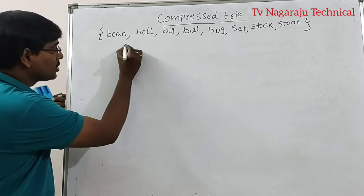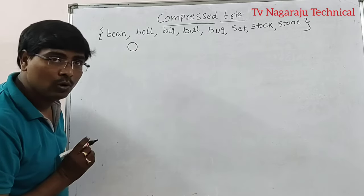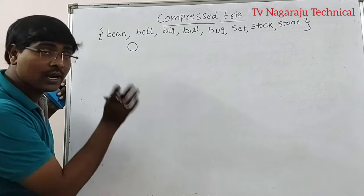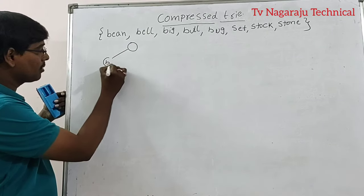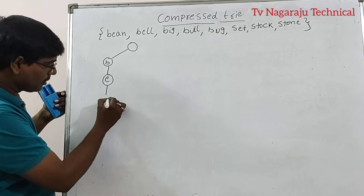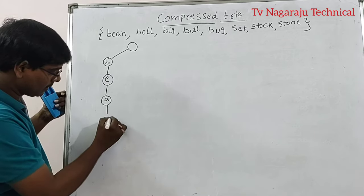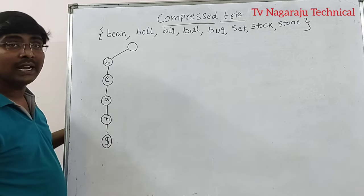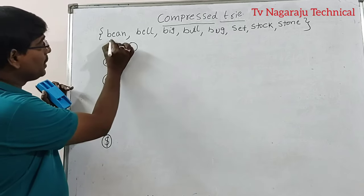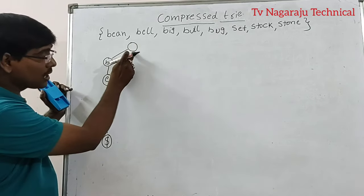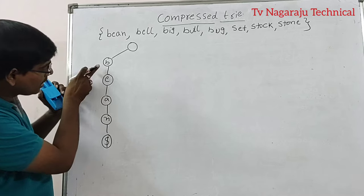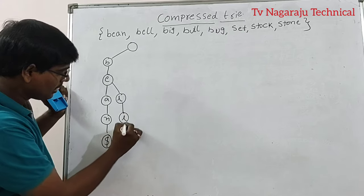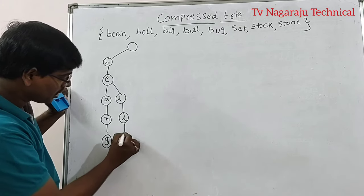Start from the root node — the root node is empty. The first string is bean: B, E, A, N. Assume the end of a string is marked by a dollar sign, which specifies the end of a string. Bean is completed: B-E-A-N-$. Next is bell: B is already available, E is already available, then expand with L, L, and then dollar.